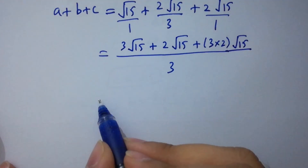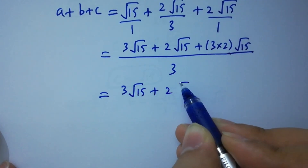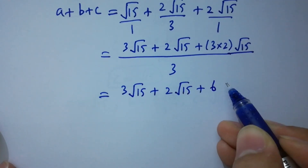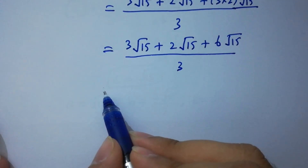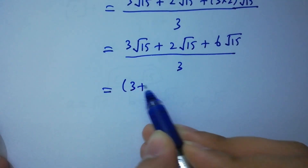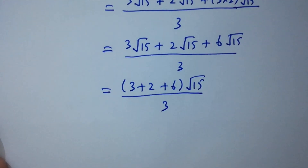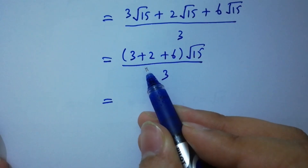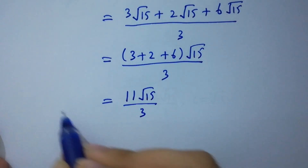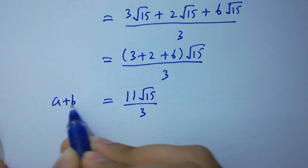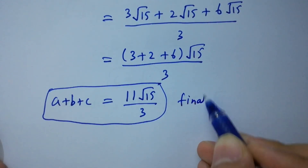We get 3 square root of 15 plus 2 square root of 15 plus 6 square root of 15, all over 3. Taking square root of 15 as common, we have 3 plus 2 plus 6 equals 11, so a plus b plus c equals 11 square root of 15 over 3, which is our final answer.